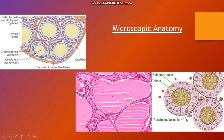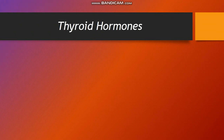This is the microscopic anatomy, also known as histologic features. The follicular cells secrete thyroid hormone. The C-cells secrete calcitonin. The colloid is a glycoprotein — a gel-like material present in the center of the follicles, which are lined by the follicular cells. You can see the follicular cells, colloid, and the parafollicular cells which produce calcitonin.